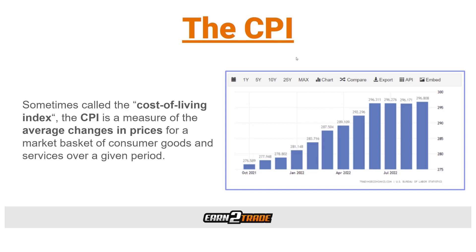An example of this would be using gold to hedge the economy because you're aware of a potential rise or fall in inflation due to the CPI. Sometimes people refer to the CPI as the cost of living index. The CPI measures the average changes in prices for a market basket of consumer goods and services over a given period of time. This basket comprises everyday necessities such as food, shelter, clothing, medical care, and transportation. In the US, as an index, the CPI tracks the expenditure pattern of American households and is usually computed monthly, quarterly, or yearly. The Consumer Price Index is the most popular measure of inflation rate and the cost of living in a country.